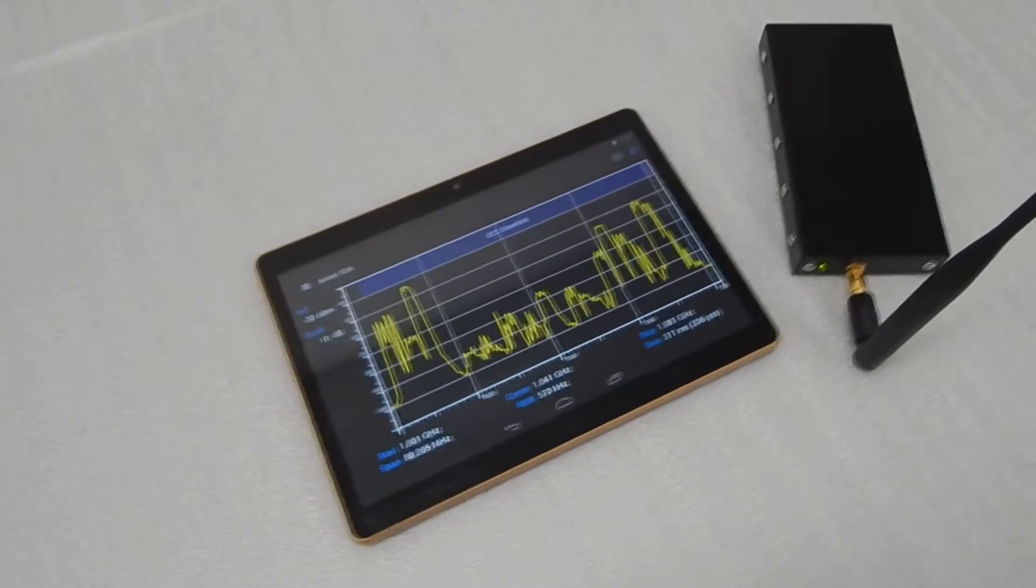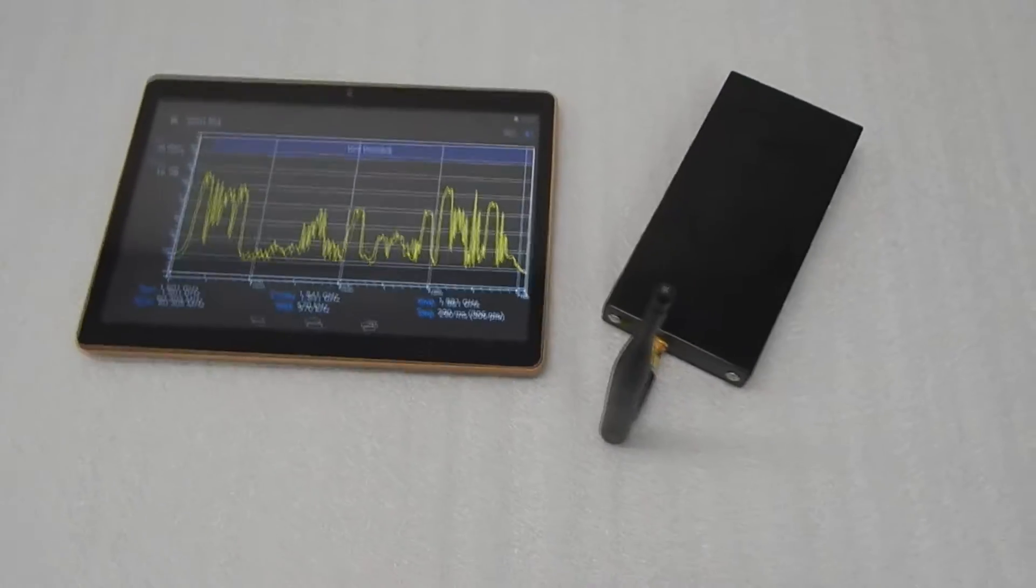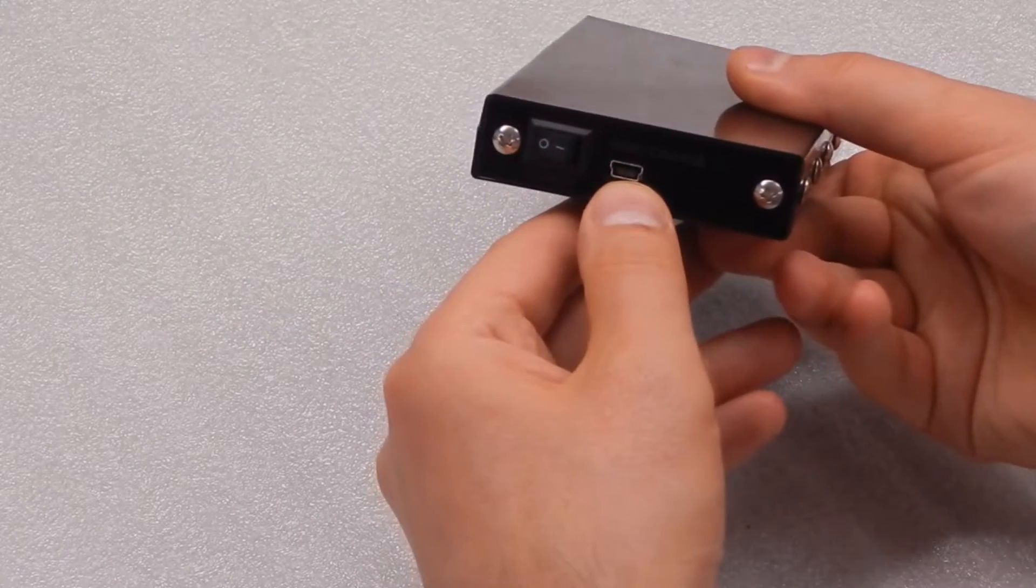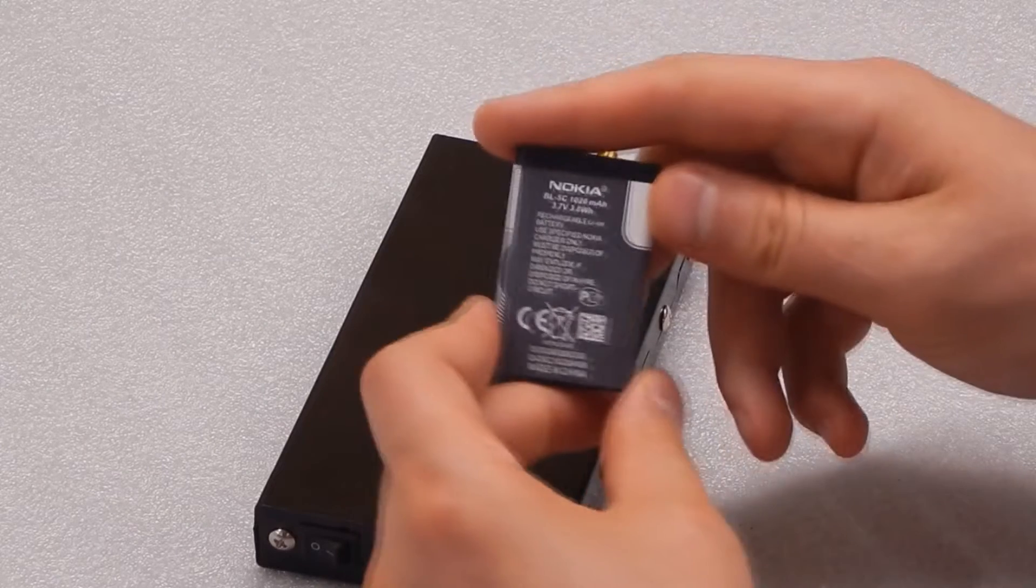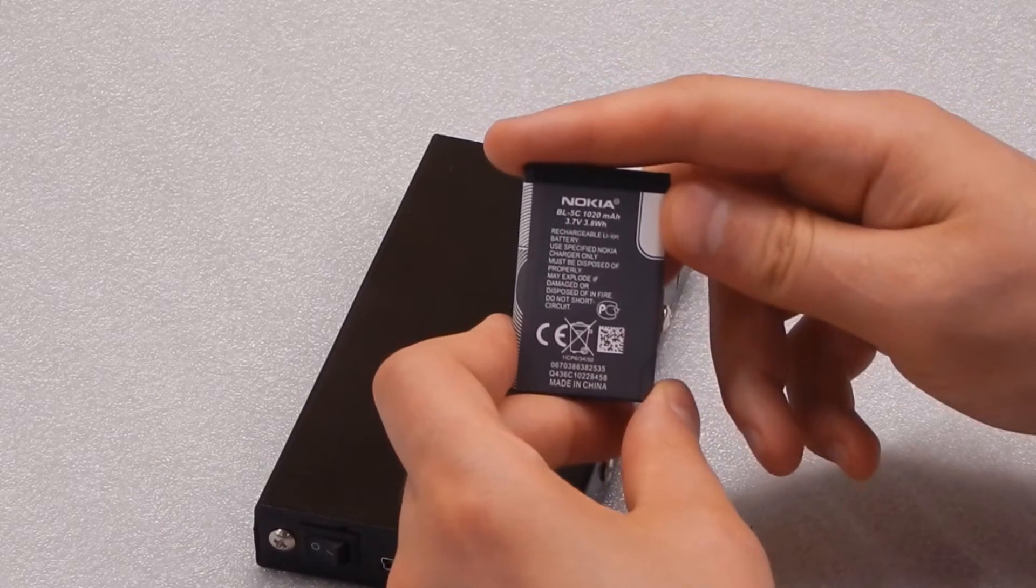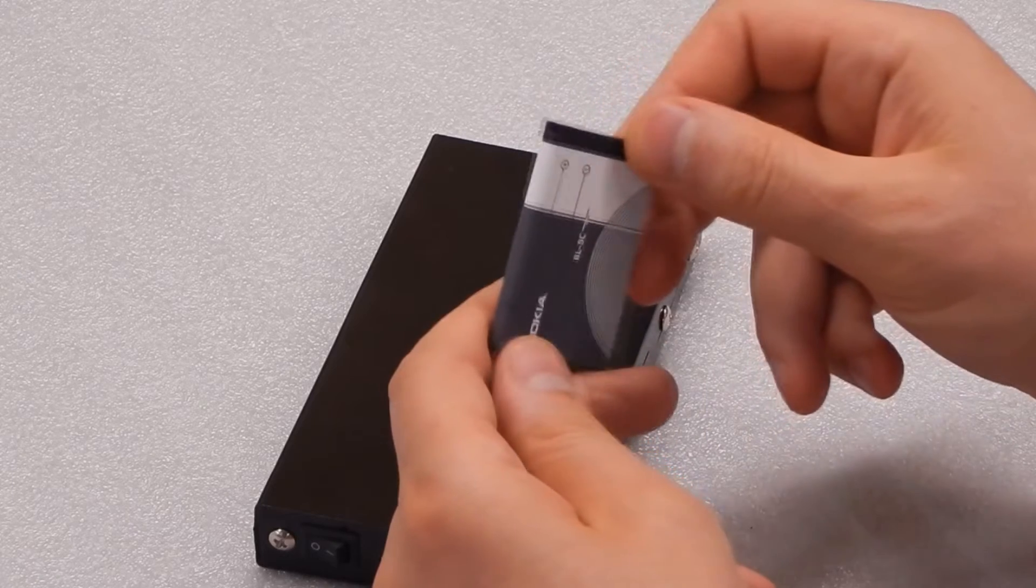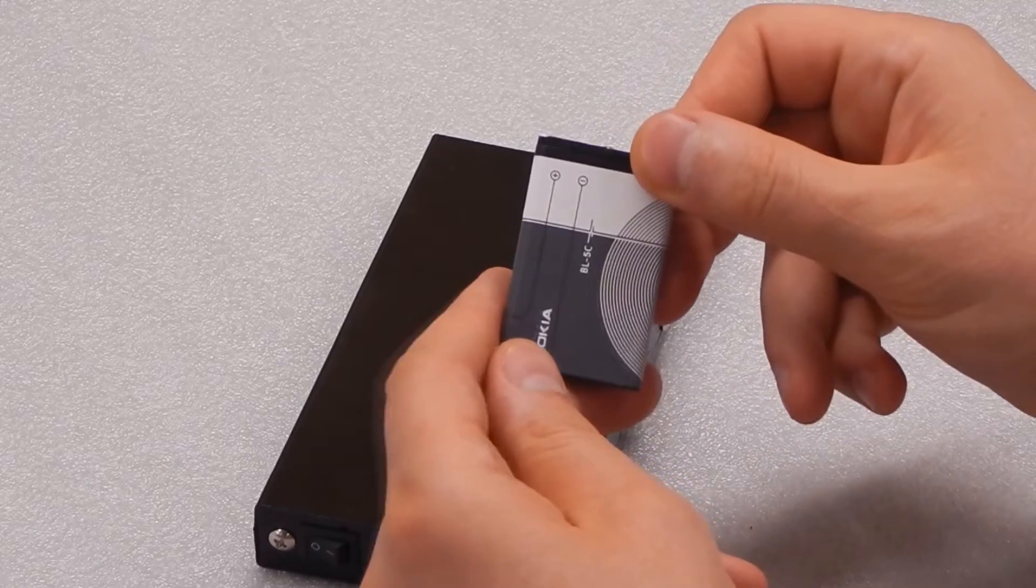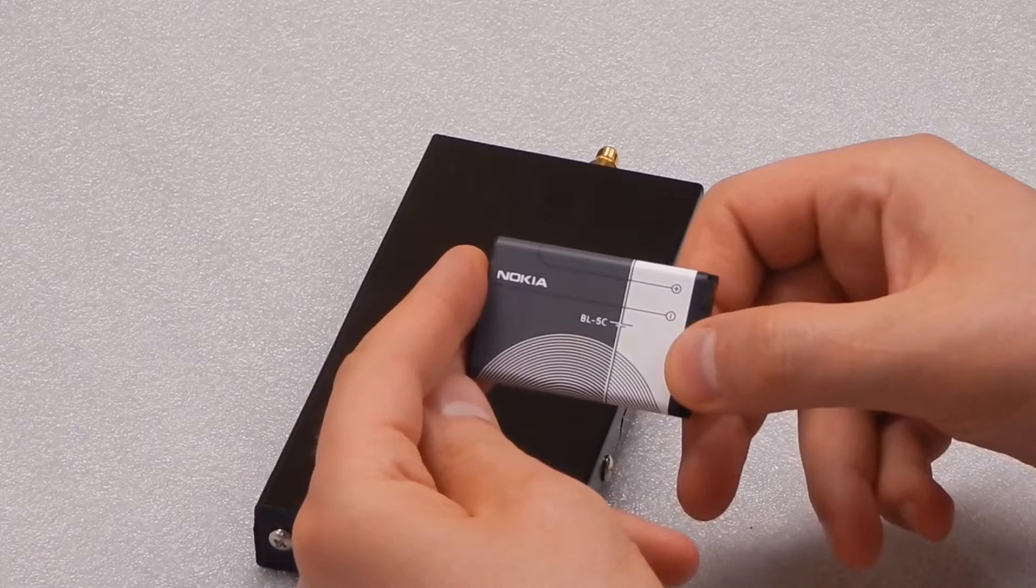In the supply package, you can also find an OTG cable of the type micro-USB, mini-USB for USB connection. Mini-USB connector is used to charge the battery with a capacity of about 1000 mAh and operation voltage of 3.7 volts. The unit is powered by a standard battery for mobile phones of the type BL4C or BL5C.